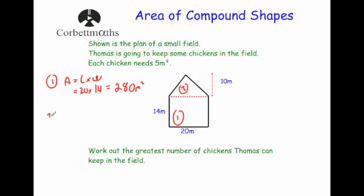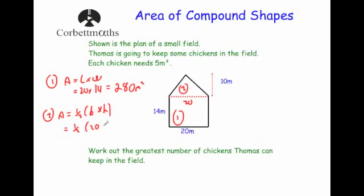For the triangle: area equals half the base times the height. There's no direct measurement given for the base, but since the bottom of the rectangle is 20, the top is also 20, so the base of the triangle is 20. The height is 10. So half of 20 times 10: 20 times 10 is 200, and half is 100 meters squared.